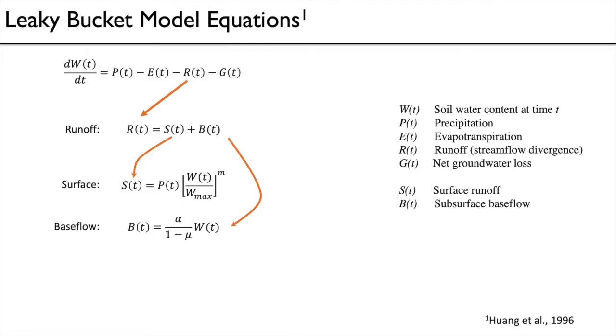The two terms there, surface runoff and subsurface base flow, are further parameterized as a function first of just precipitation. So this S(t) equals precipitation times soil moisture at time t, so soil moisture at a given month, relative to the maximum water holding capacity of soil moisture at that site. That's just a fixed number, a parameter. So in a really porous soil, that Wmax will be higher. In really clay soil, it's not very porous, that Wmax will be lower.